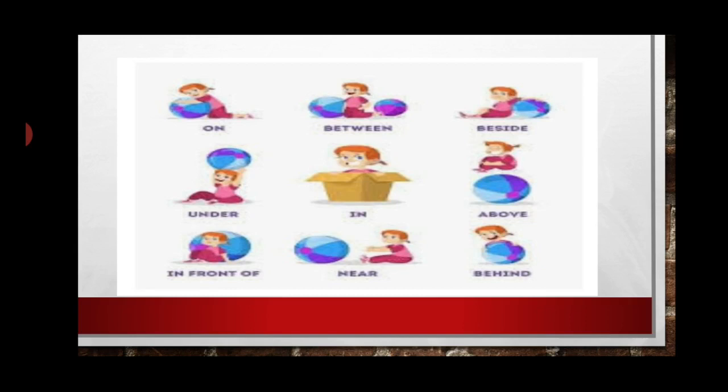Now, prepositions can be distinguished into three types. First is the preposition of place. Second is the preposition of time. Third is the preposition of direction. The preposition of place means we have to observe where exactly the things are — what place the object is in.